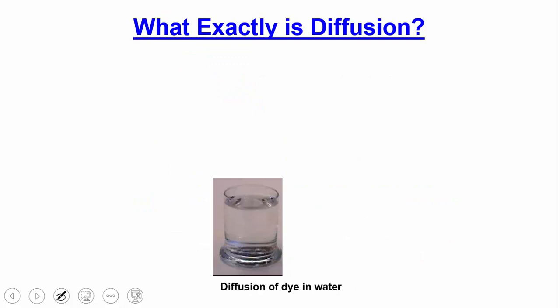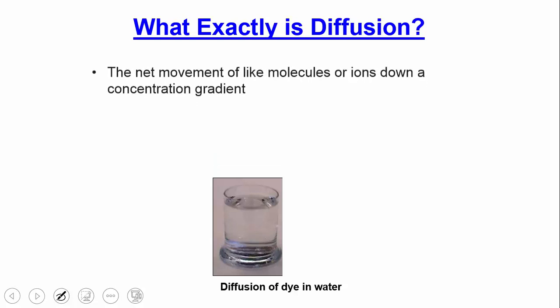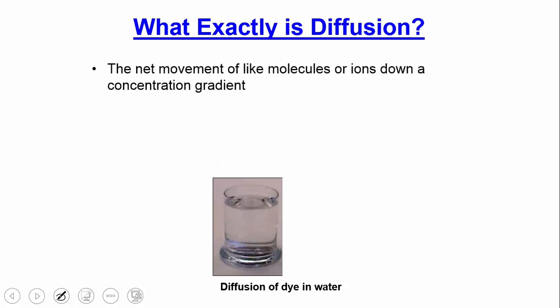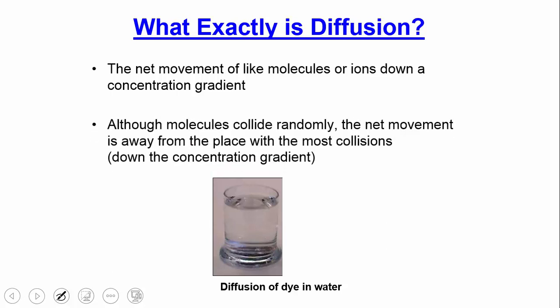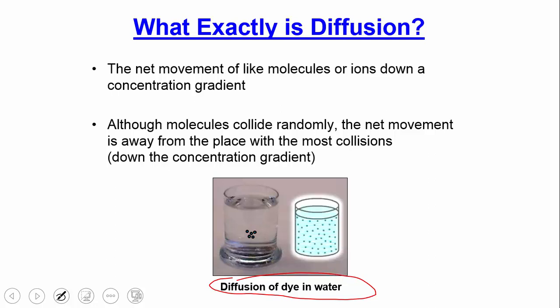Diffusion is the net movement of molecules or ions down a concentration gradient — from an area of high concentration to an area of low concentration. Molecules collide randomly, but the net movement is down the gradient. For example, if you drop dye in water, the dye molecules are initially concentrated, but through Brownian motion they diffuse and spread throughout the entire beaker.